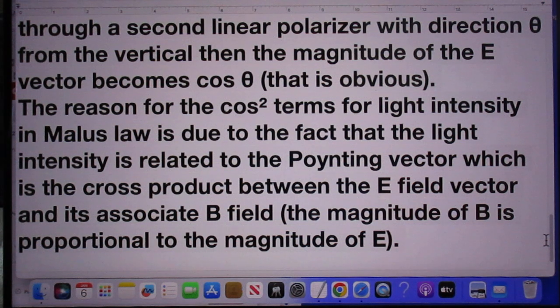The reason for the cosine squared term for the light intensity in Malus's law is due to the fact that the light intensity is related to the Poynting vector.